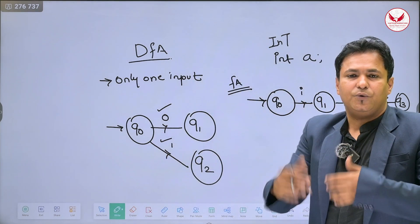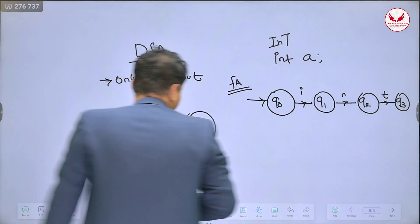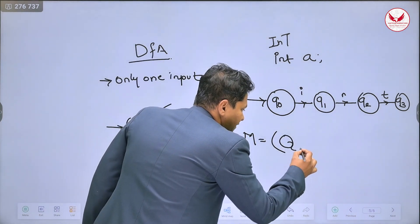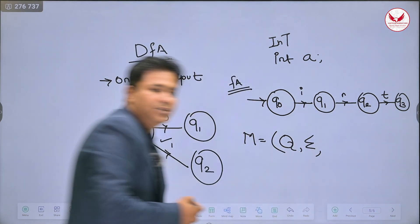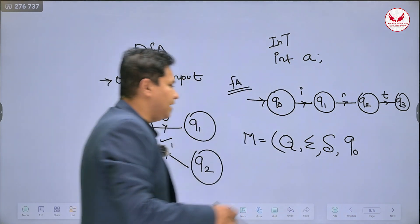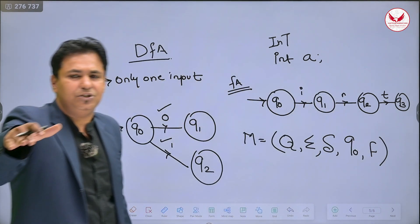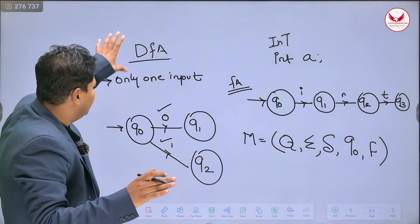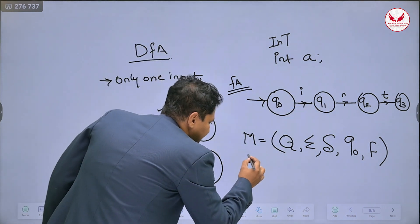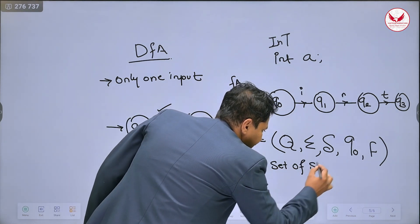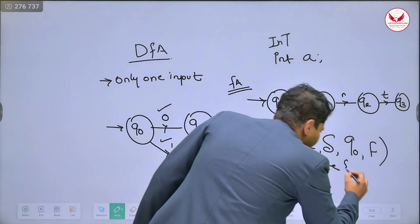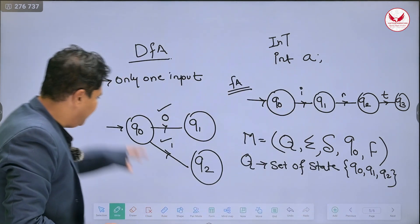The machine Q0, Q1, Q2 — how do you represent the DFA? You represent the DFA with the help of tuples. This machine consists of a total of 5 tuples. The first is Q, the second is the input you are going to process, next is the transitions of the machine, then the initial state, and the last is the final state F where the machine stops or halts. Q is nothing but a set of states. In this machine, we have used Q0, Q1, and Q2 — three states, represented by Q.